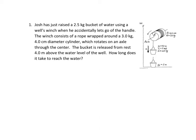Josh has just raised a 2.5 kilogram bucket of water using a well's winch when he accidentally lets go of the handle. The winch consists of a rope wrapped around a 3 kilogram, 4 centimeter diameter cylinder which rotates on an axle through the center. The bucket is released from rest 4 meters above the water level of the well and we want to know how long it takes to reach the water.